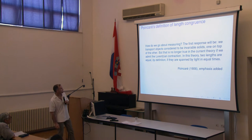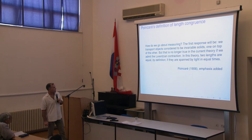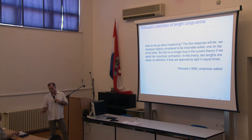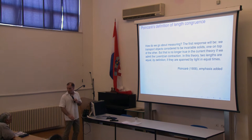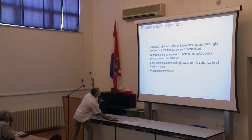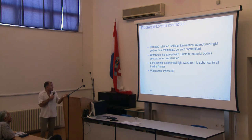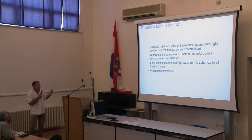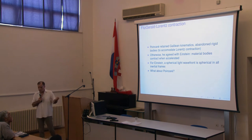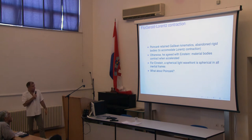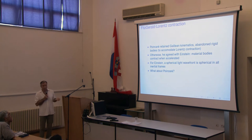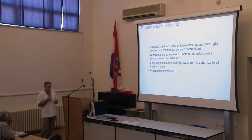The Lorentzian contraction — the hypothesis that Fitzgerald and Lorentz introduced to explain the Michelson-Morley null result — stated that all bodies are contracted in the direction of their motion. For Poincaré in this memoir, his remarks concern a single frame; he used active Lorentz boosts at that point, which was rather unusual. The idea here is that Poincaré retained Galilean kinematics but abandoned the notion of rigid bodies to accommodate Lorentz contraction. All bodies in motion must undergo contraction to obey the Lorentz transformations. For Einstein, a spherical light wave is spherical in all inertial frames. What did Poincaré have to say about this?